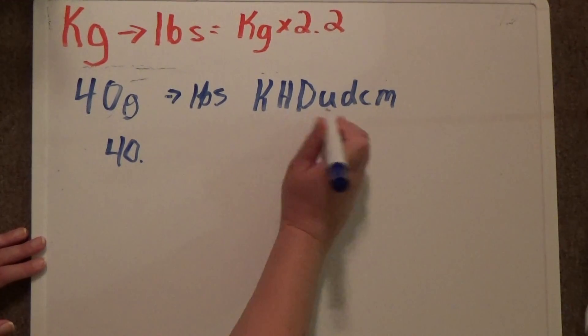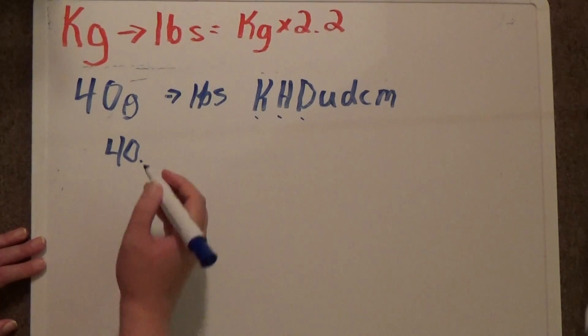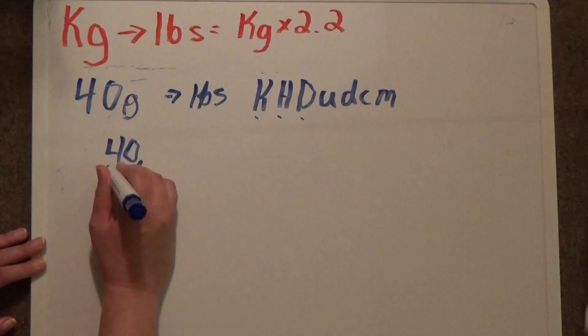I need to go to kilograms. So, I need to move the decimal point 1, 2, 3 places to the left, 1, 2, and 3.